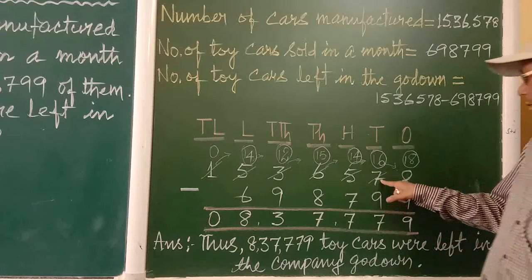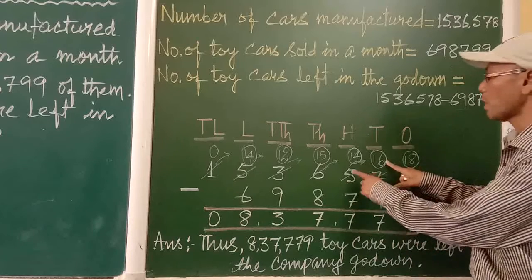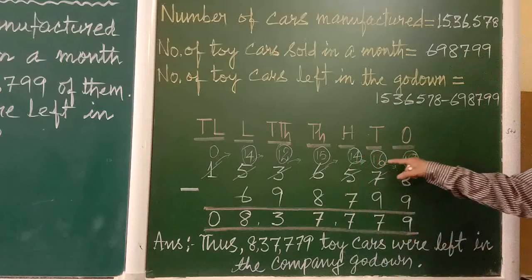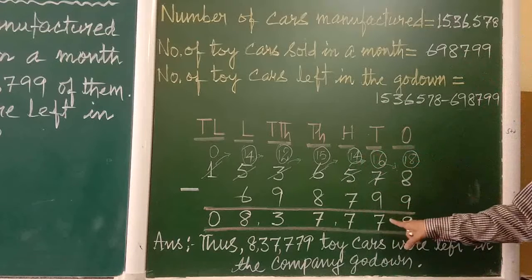Previously it was 7, now it is 6. So we borrowed one from here, that means here it is 16. 16 minus 9 is 7.